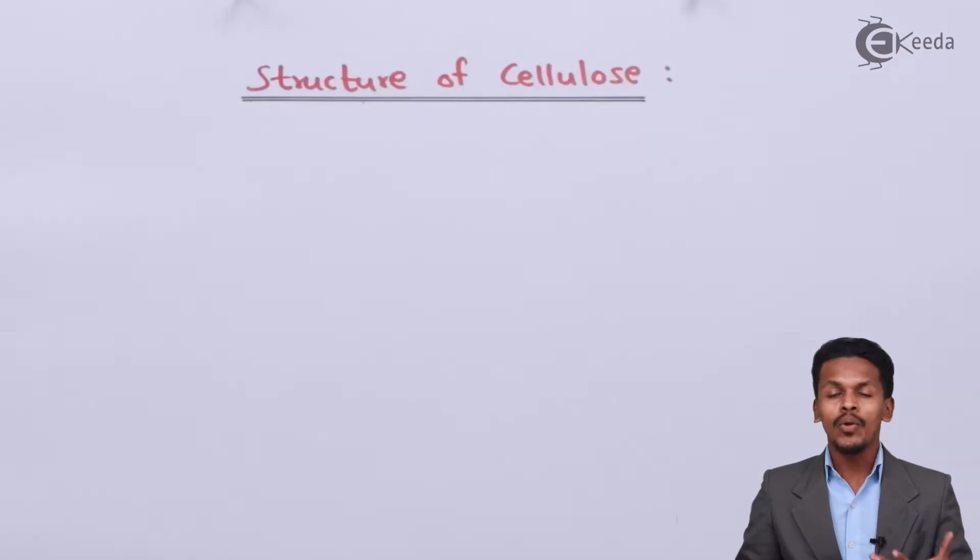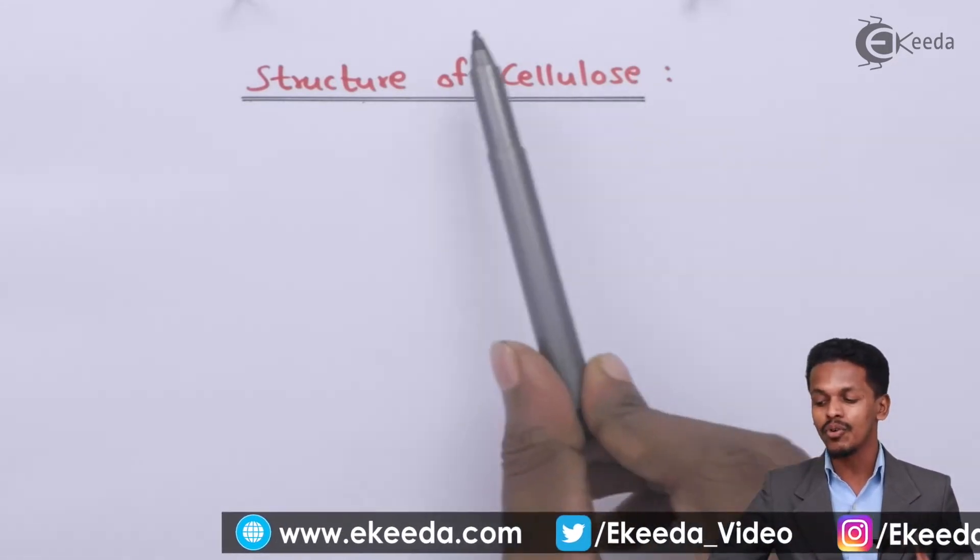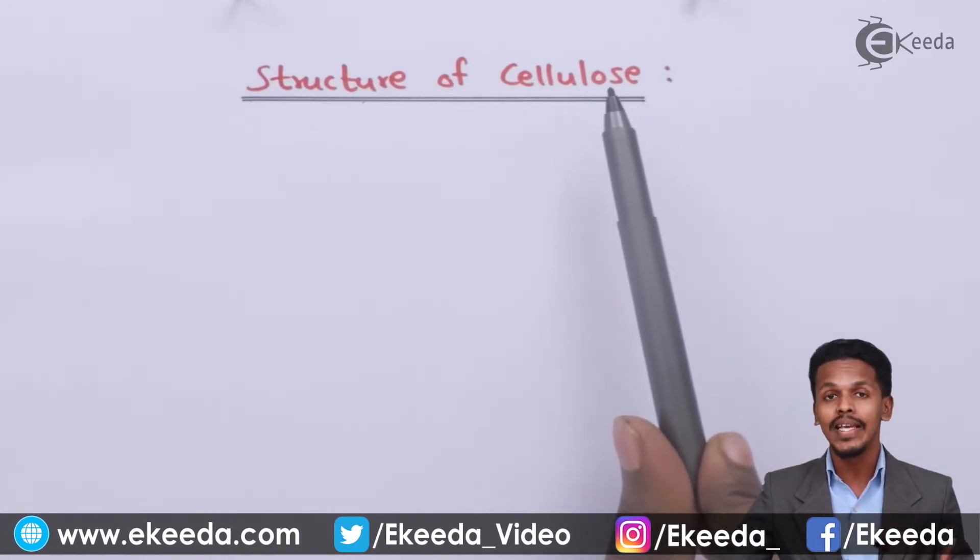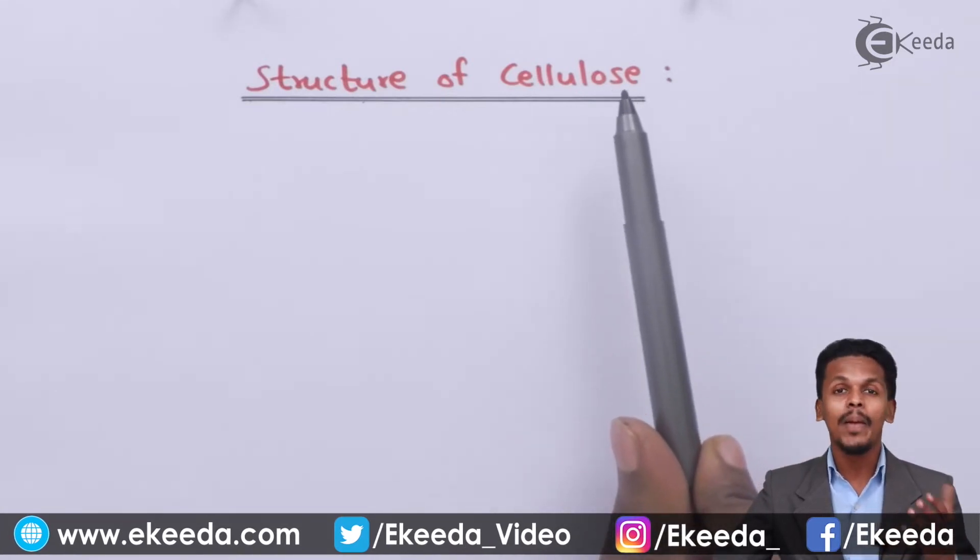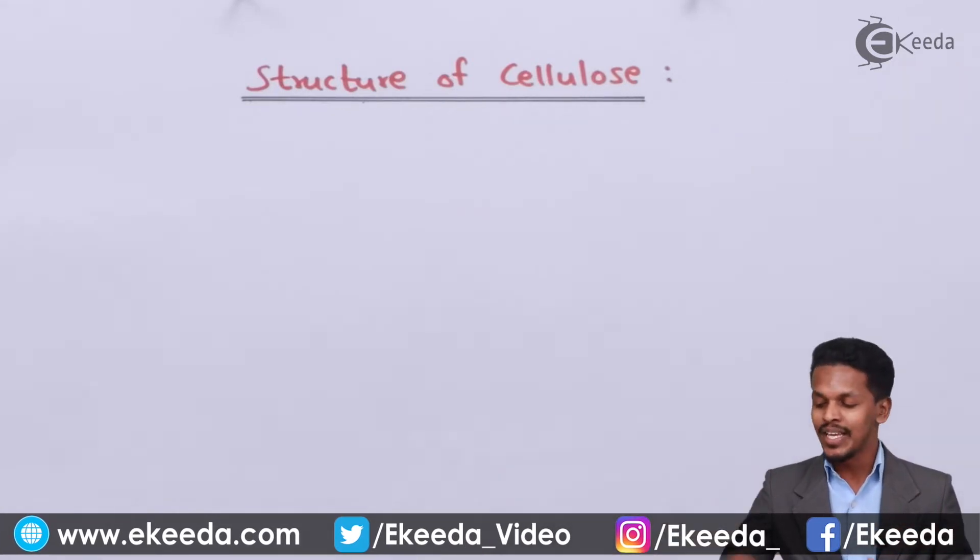So friends, talking about amylose, amylose was a polymer of alpha-D-glucopyranose. And similarly we are talking about cellulose over here. And cellulose is the polymer of beta-D-glucopyranose. So based on that let us understand what is the structure of that.